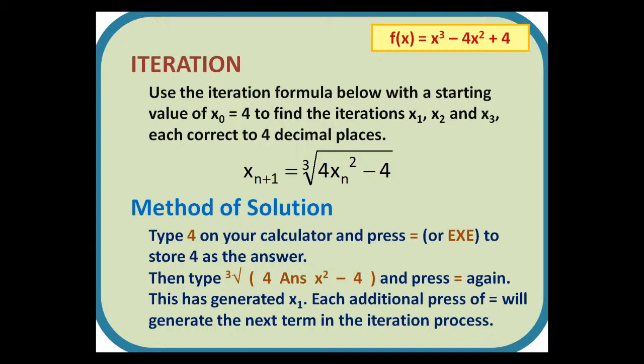Type 4 on your calculator and press equals to store 4 as the answer. Then type the cube root, open brackets, 4, answer, x squared, minus 4, close brackets, and press equals again.